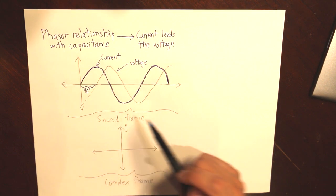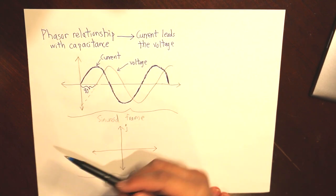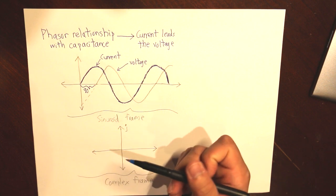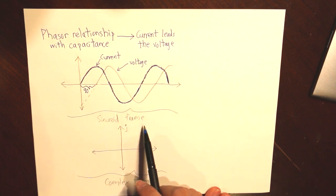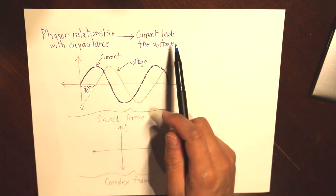And that 90 degrees translates into the polar form. And if we want the rectangular form, that is simply J. So that's the sinusoid frame for the phasor in the capacitance since current leads the voltage.